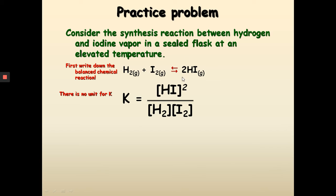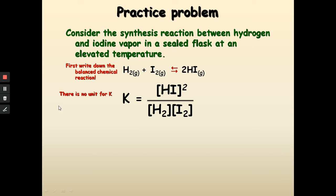The product, which is on the right side, is placed in the numerator, and the reactants are placed in the denominator. Remember, the coefficient now becomes the exponential power. Because there is a 2 in front of hydroiodic acid, I put it to the second power. Hydrogen gas and iodine gas have no coefficient, meaning it's 1, so the power is 1 for each, which I have omitted. Please keep in mind: there is no unit for K. K is a ratio between the amount of product over the amount of reactants, so it does not have any unit.